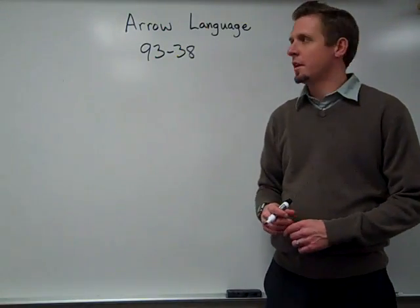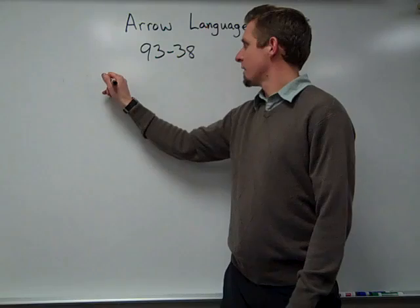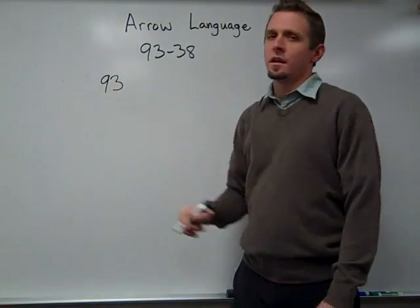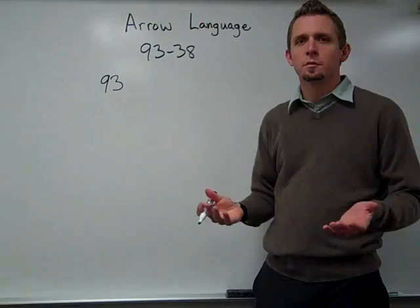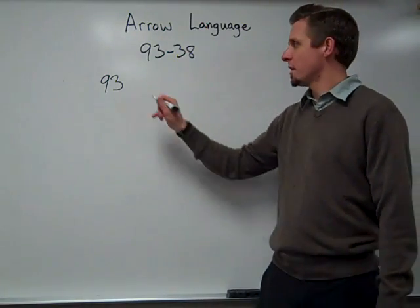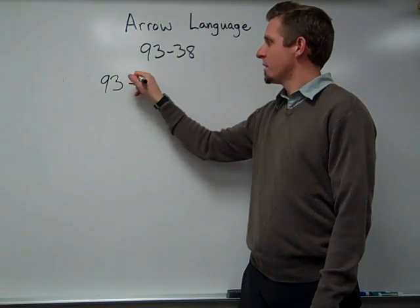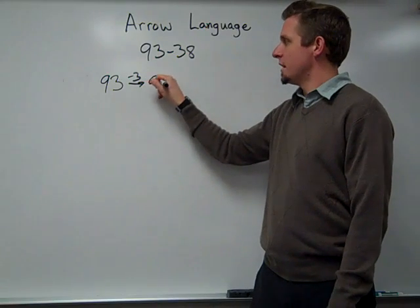This is called arrow language or arrow notation. So I start at 93. And then the thinking here is I want to use numbers that I'm familiar with or comfortable with. Friendly numbers is what we often call them. So I start at 93. I take away 3. That takes me to 90.